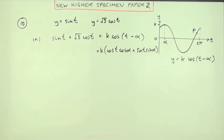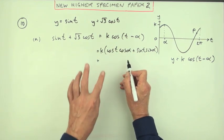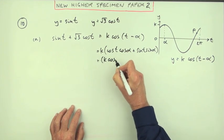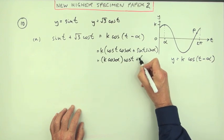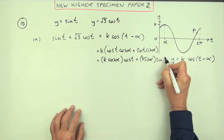I just made a bump on the graph. That gets the mark, but I like to rearrange it so I've got the coefficient separate from the variable. So I've got k cos alpha times cos t plus k sine alpha times sine t.